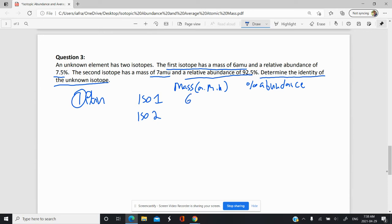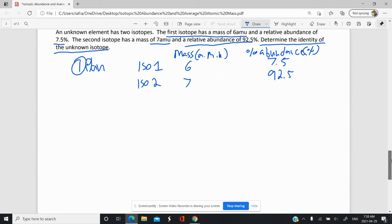So this is 6 AMU, and the percent abundance was 7.5 percent. And then isotope 2 was 7 AMU, and the percent abundance is 92.5%. Hopefully you're noticing that as long as you have all the isotopes there in the question, the percent abundance will add up to 100%, because this is a collection of all the isotopes that exist.